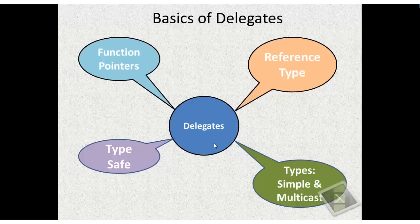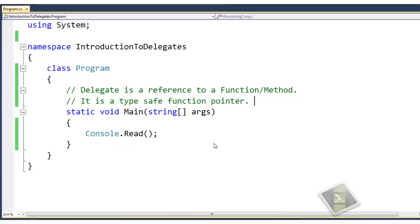Those who come from a C++ background are very well aware of the term function pointers. A function pointer is a pointer that holds a reference to a function or a method in C#. As I said, a delegate is a reference to a function or a method.